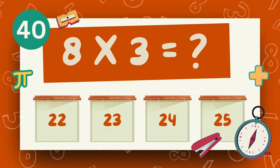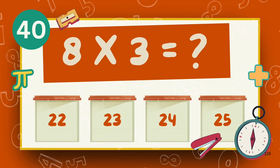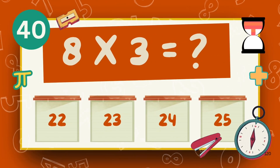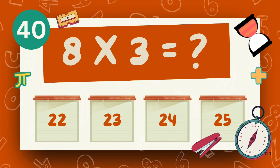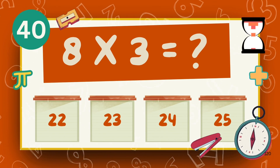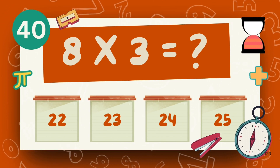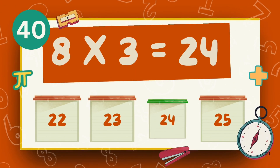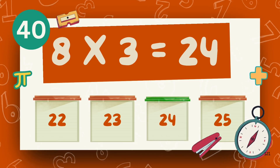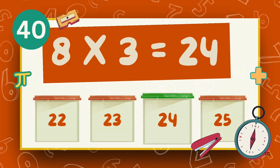What is 8 multiply 3? What is 9 multiply 4? The answer is 24.